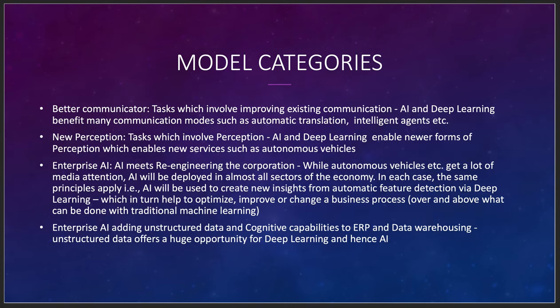Better communicator models handle existing communication tasks. AI and deep learning can help with automatic translation and intelligent agents. I use Google Translate frequently when teaching abroad — I'll spend my first month in a country relying on it. By then I'm starting to pick up around a hundred words of the local language. I love automatic translation because the shopkeeper, taxi driver, or hotel staff can help me get where I need to go when I show them in their native language.